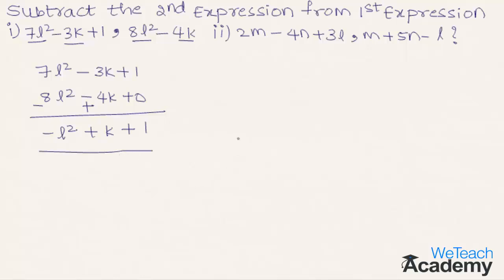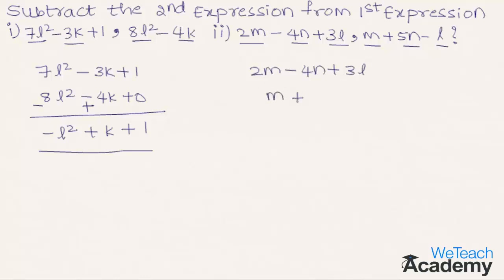Now let us solve the second example. The first expression is 2m minus 4n plus 3l, and the second expression is m plus 5n minus l. Let us write these two expressions one below the other such that like terms appear in the same column: first expression 2m minus 4n plus 3l, and second expression m plus 5n minus l.